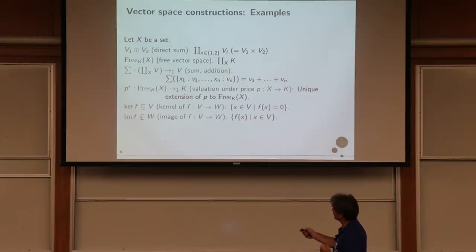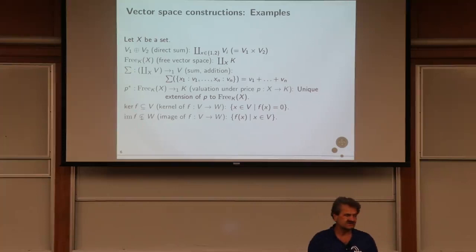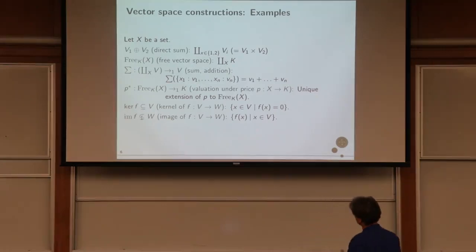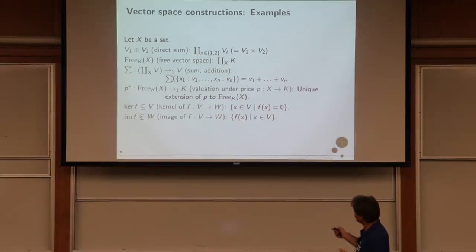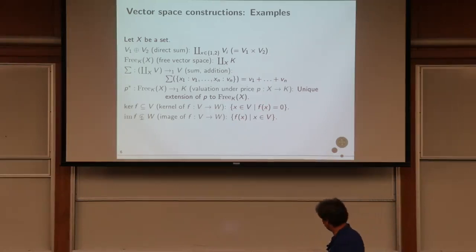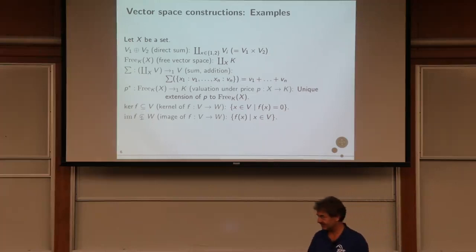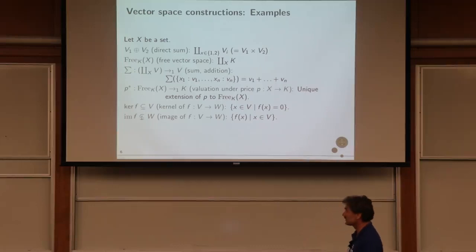The kernel of a linear map f is all x's such that f(x) = 0, and the image is all y's that are in the range of f.